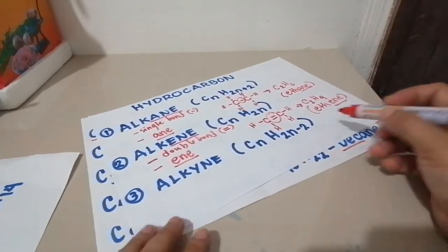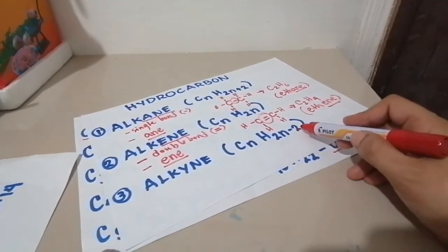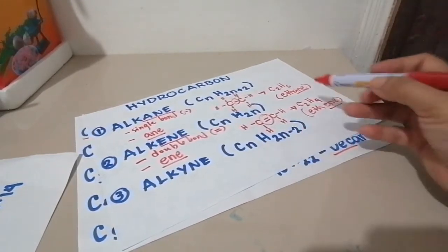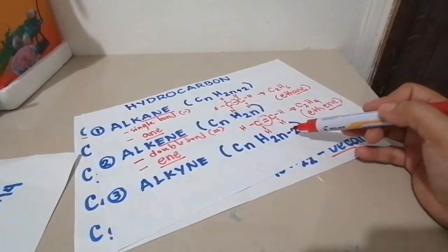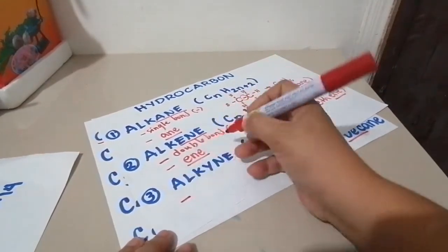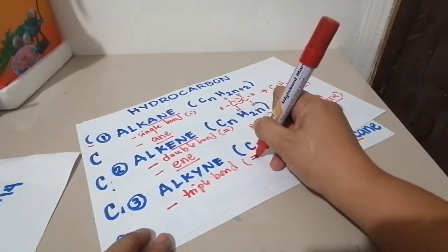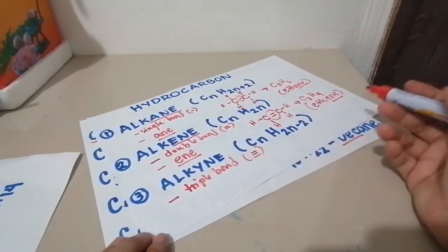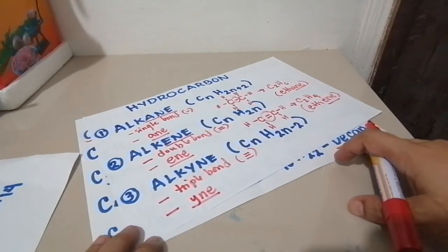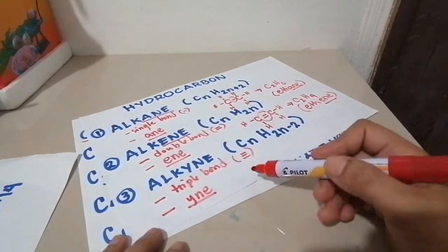Next is the alkyne. Alkyne has a general formula of CnH2n minus 2. The number of carbon times 2 minus 2. If this one adds, this one is just times 2, this one times 2 but it subtracts. And also, alkyne has a triple bond. Don't forget for alkyne, it has a triple bond and it has the YNE suffix when we are naming them.